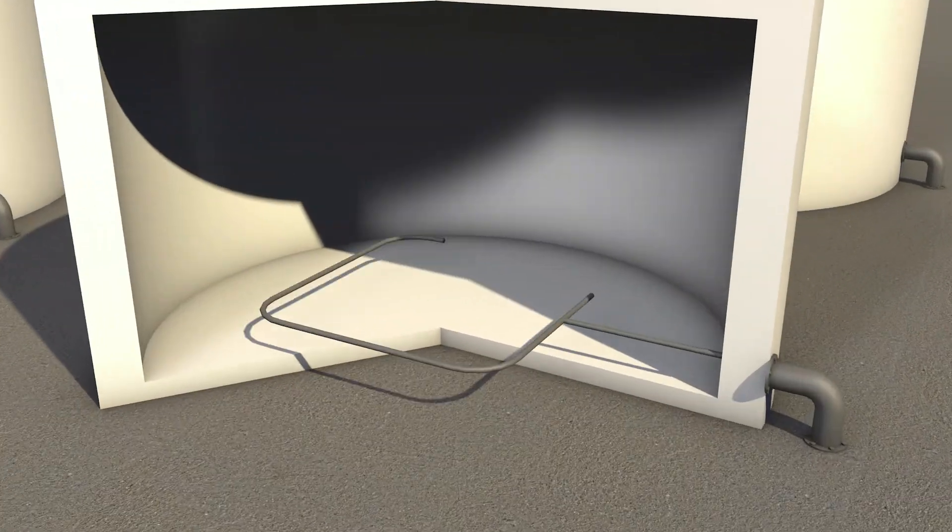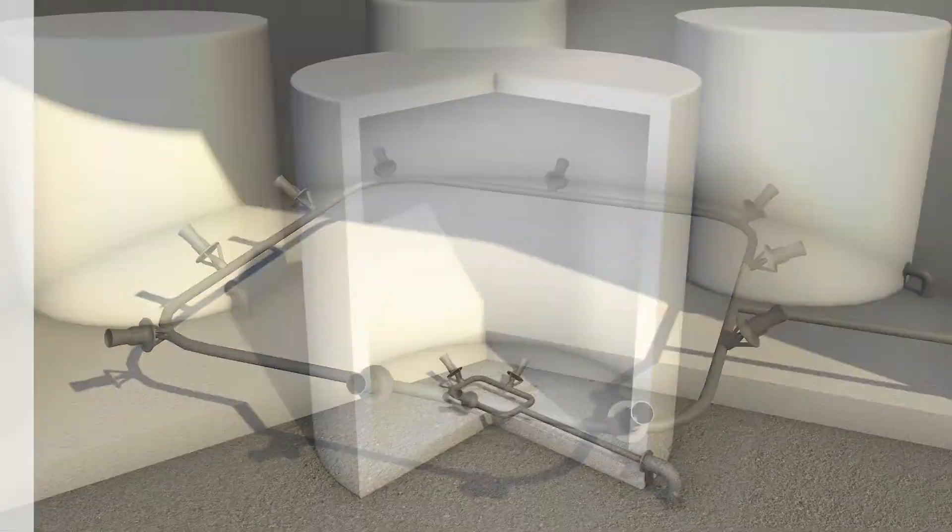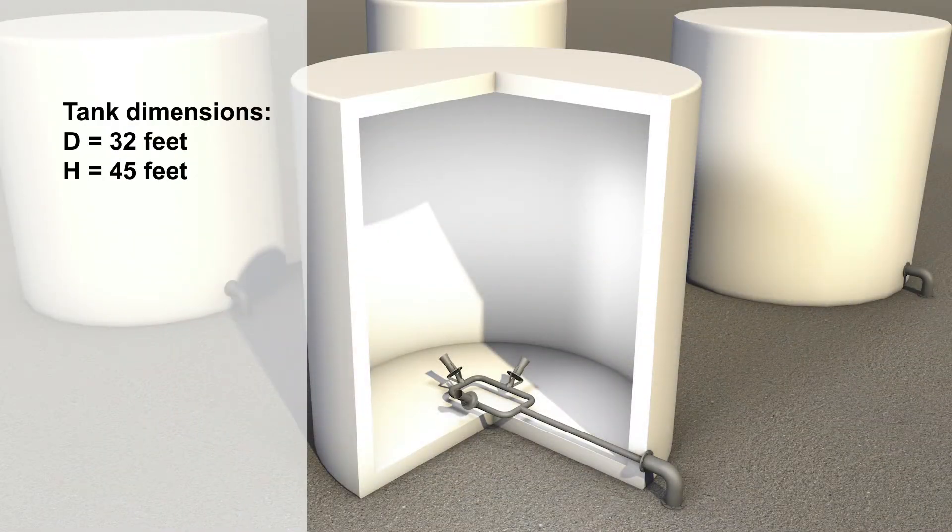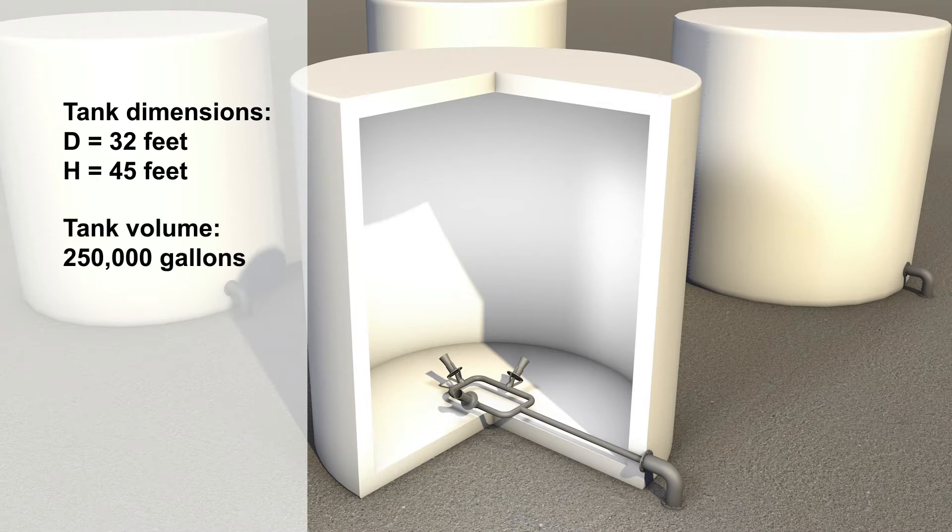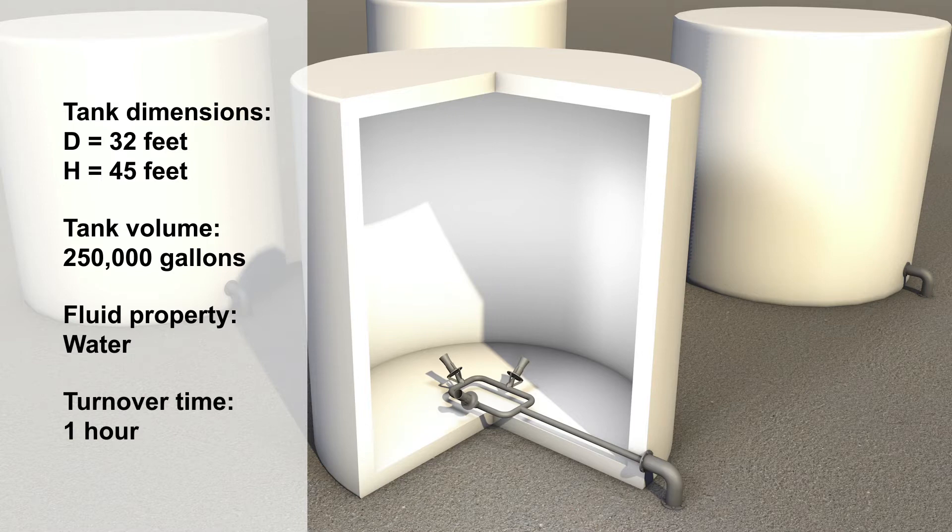We will use your data and goal of mixing to design your system. This tank has a diameter of 32 feet, a height of 45 feet, and a volume of 250,000 gallons. The liquid is water. The turnover time requirement for blending was one hour.